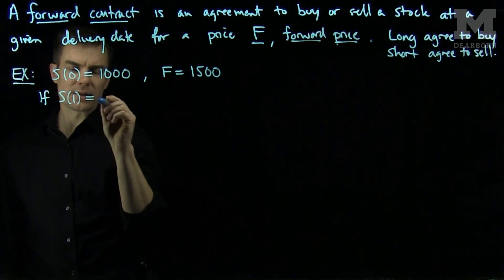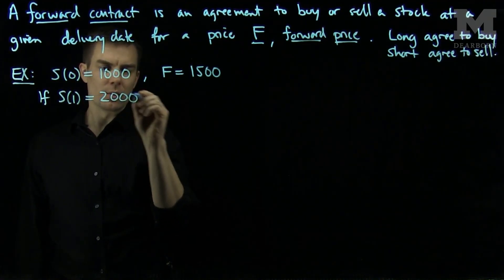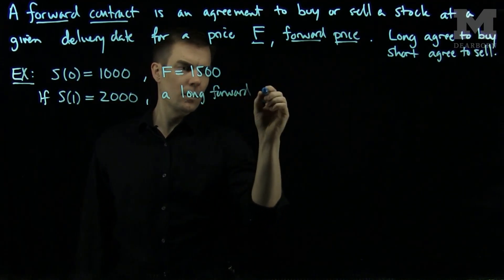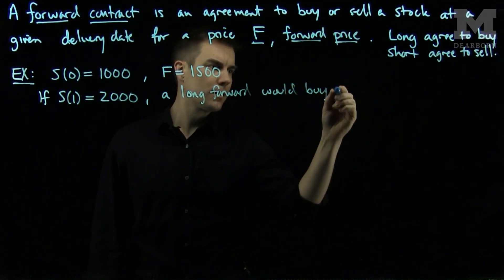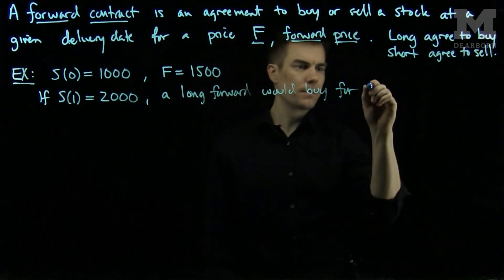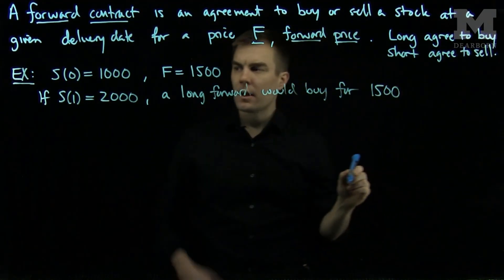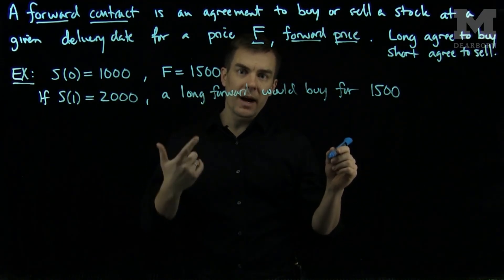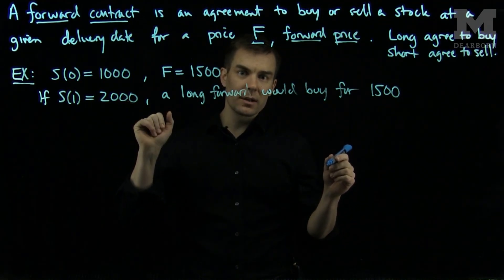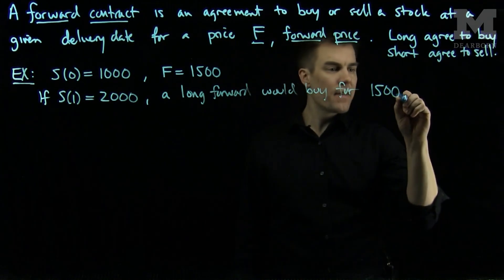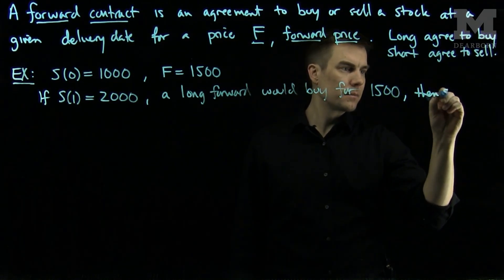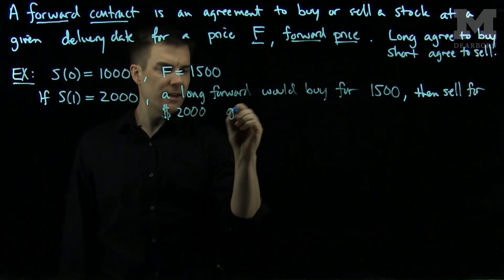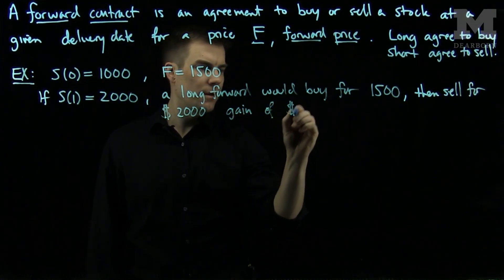If S(1), the stock price after one year, is $2,000, a long forward position would buy for $1,500. Since the long forward position agreed to buy the stock for $1,500 at the end of the year, he is entitled to buy that stock even though it's worth $2,000 on the market. They are entitled to buy it for $1,500 and then they would immediately sell for $2,000 and have a gain of $500.